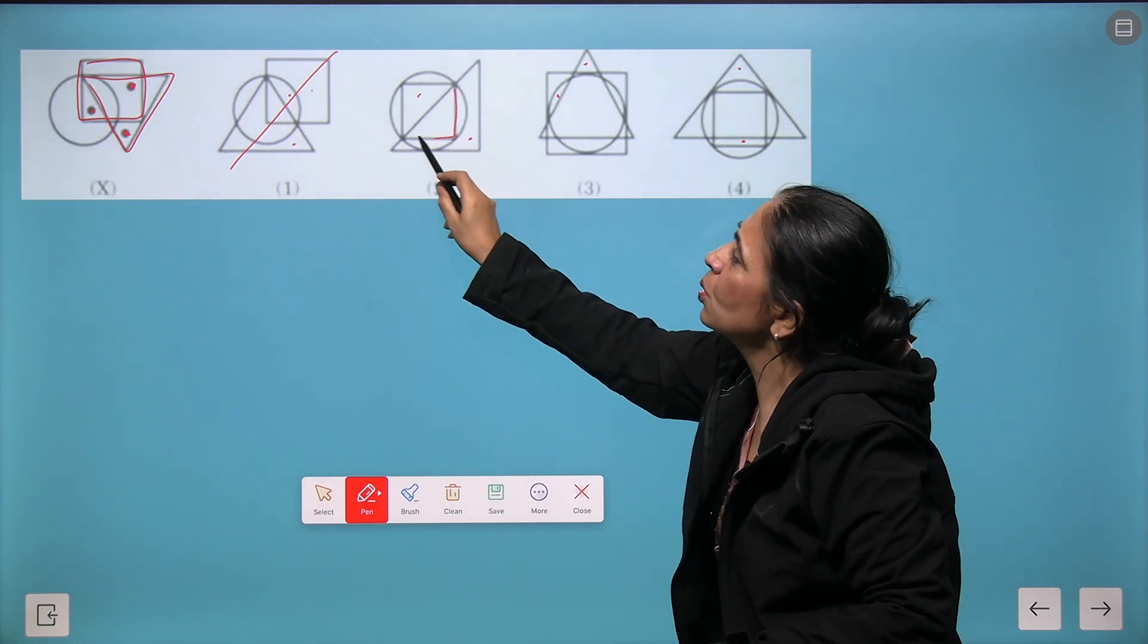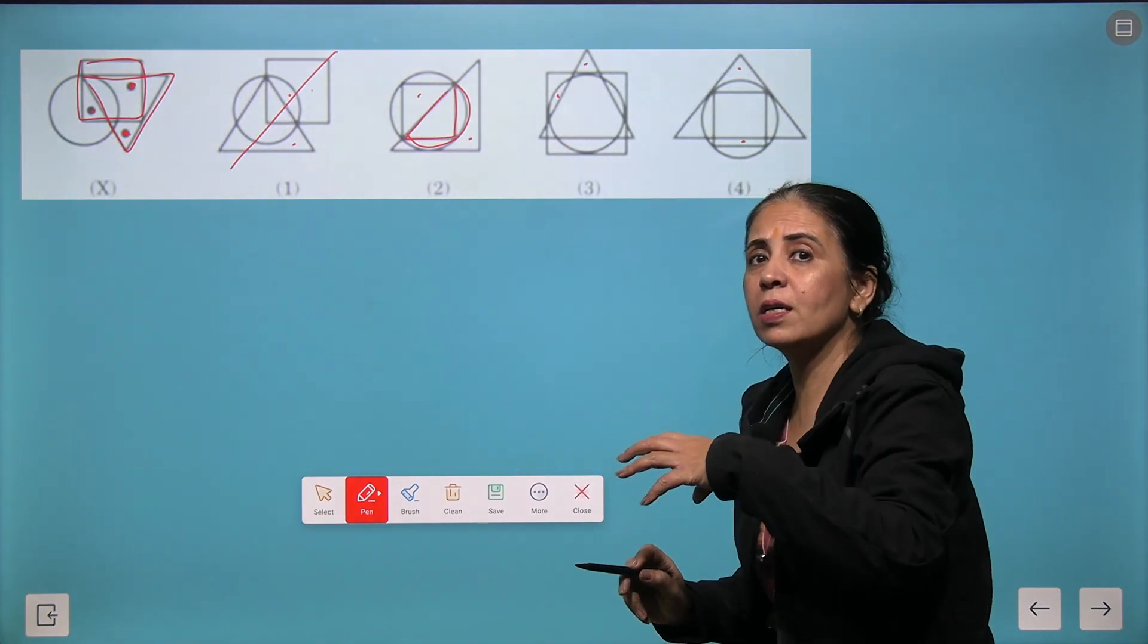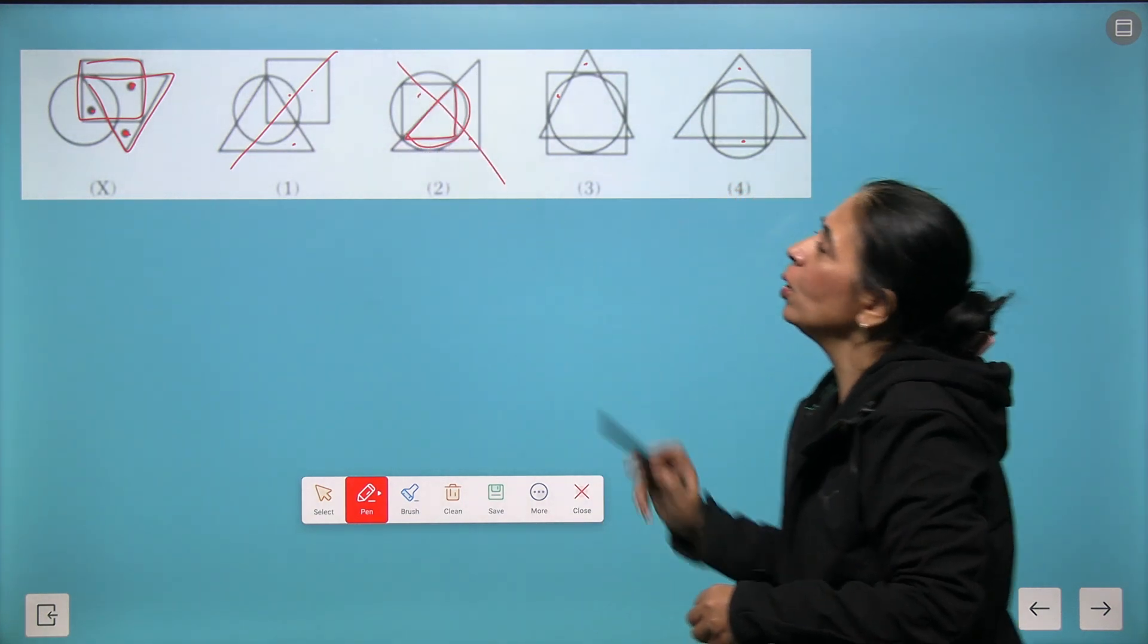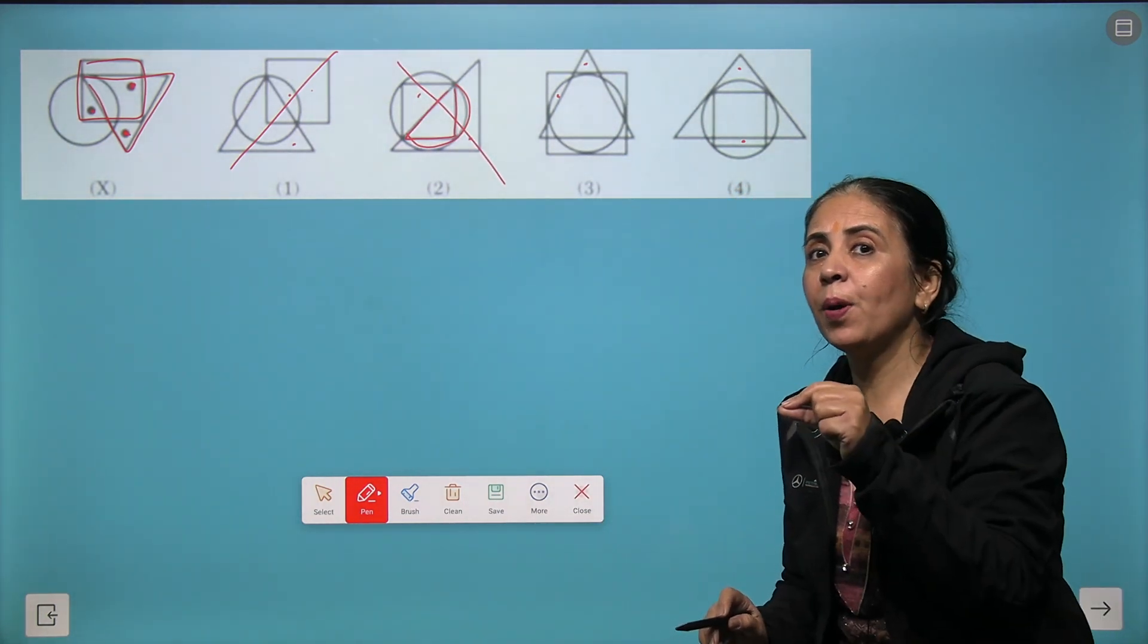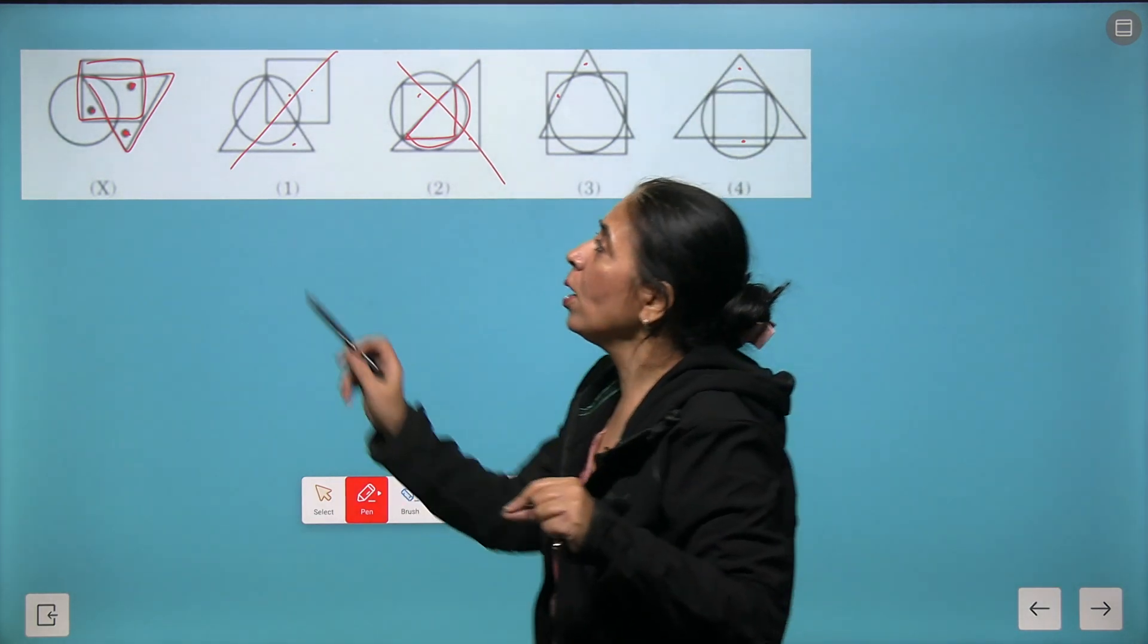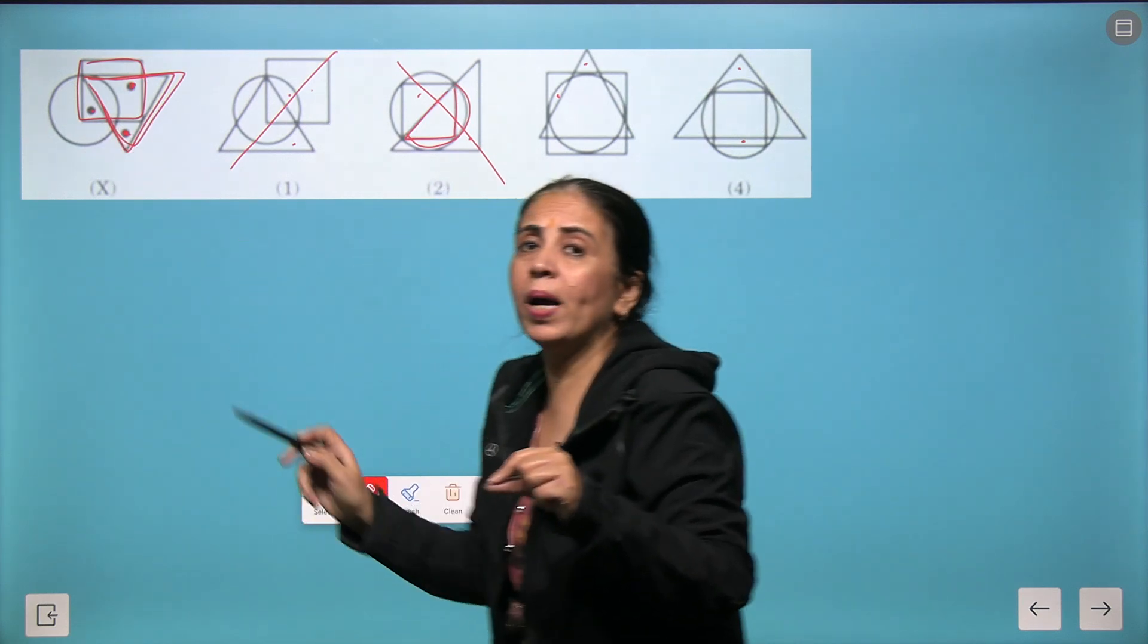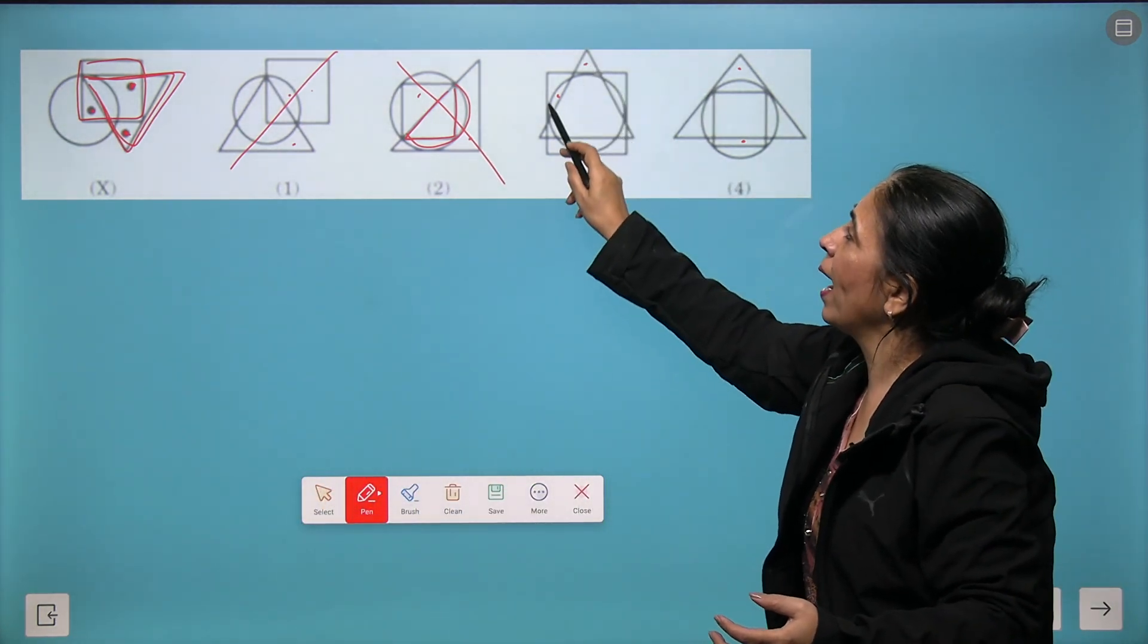So this also cannot be the option. So this also cannot be the option. Every time you have to remember that the dot must exist between triangle and square but outside the circle.